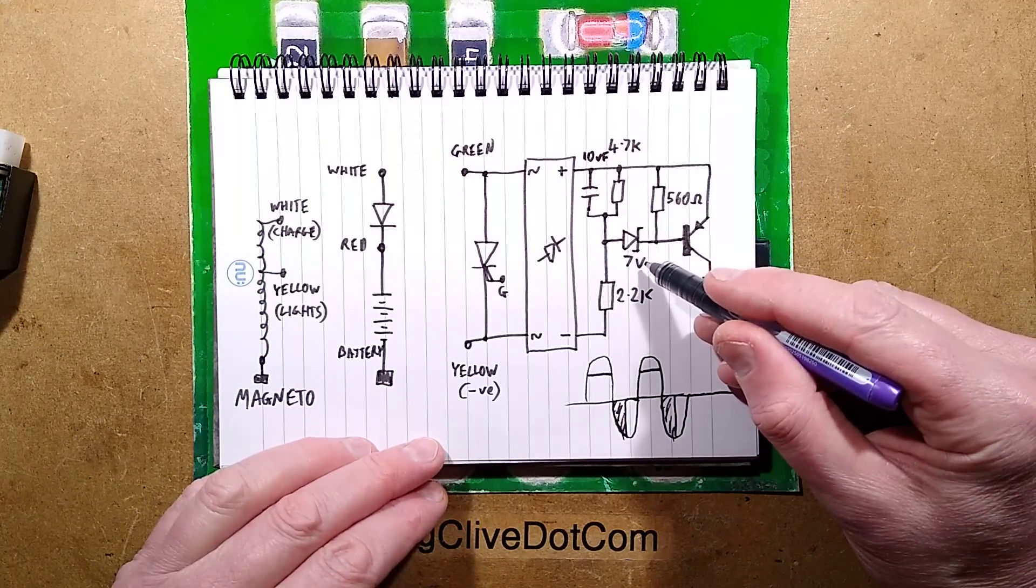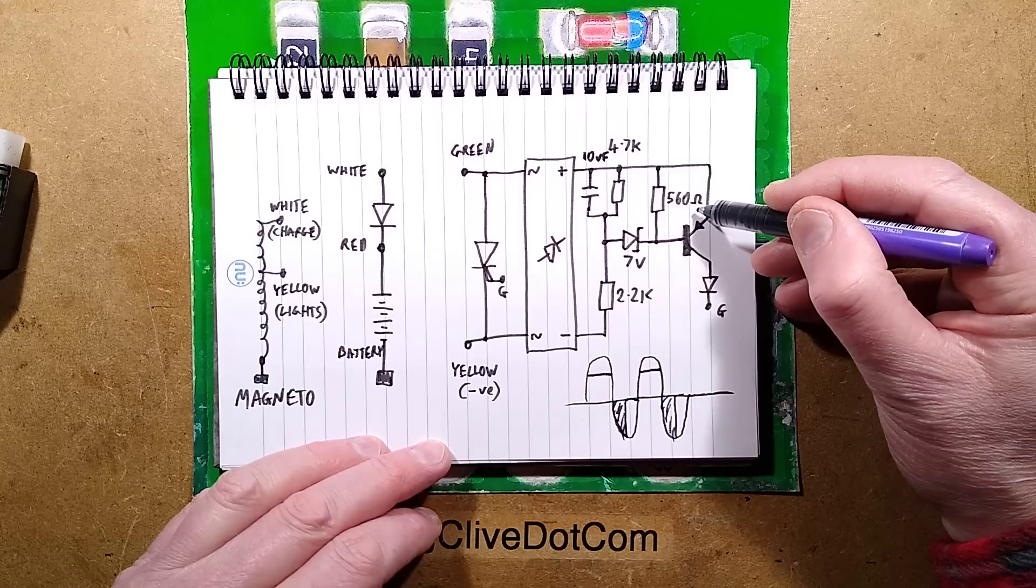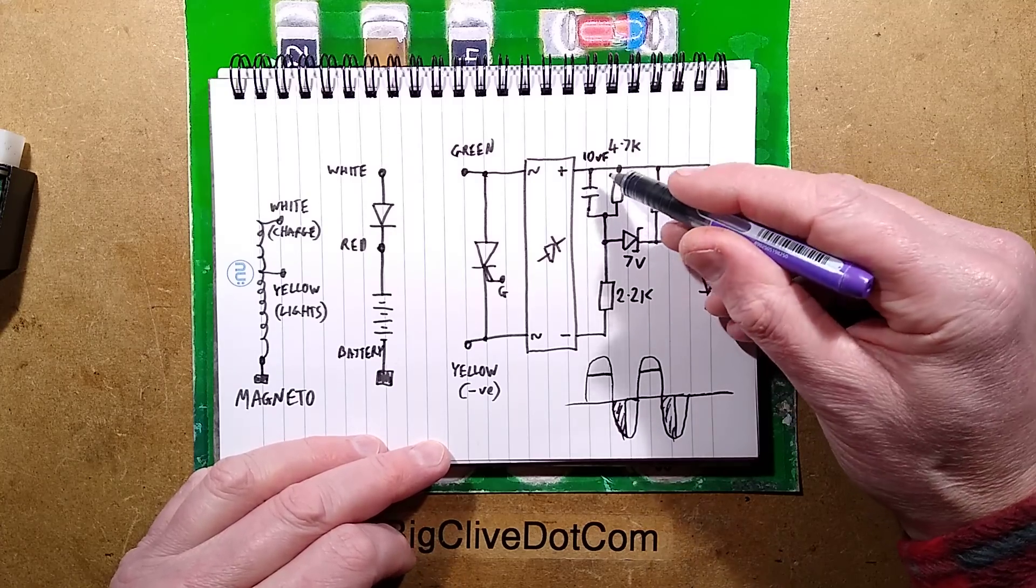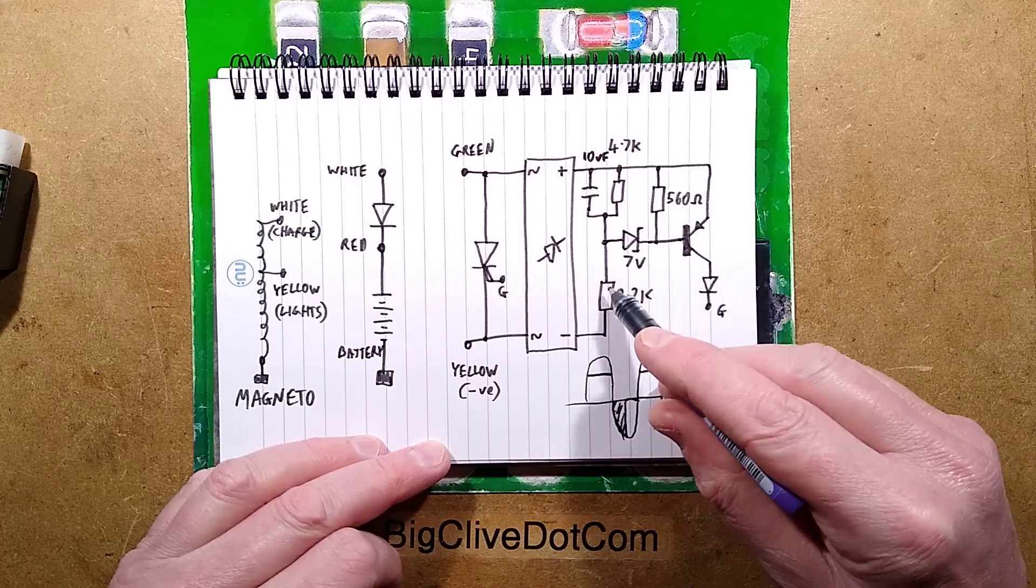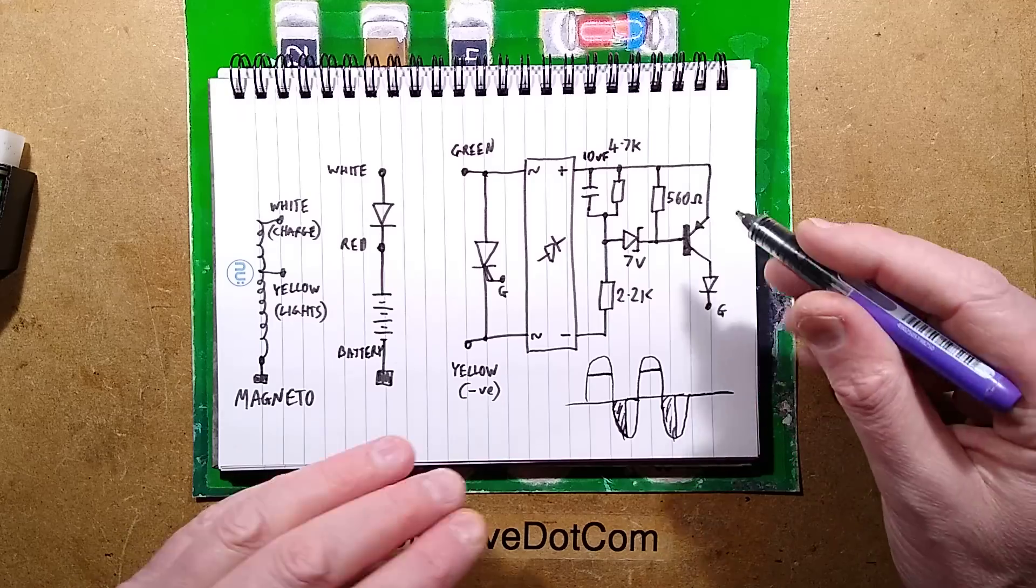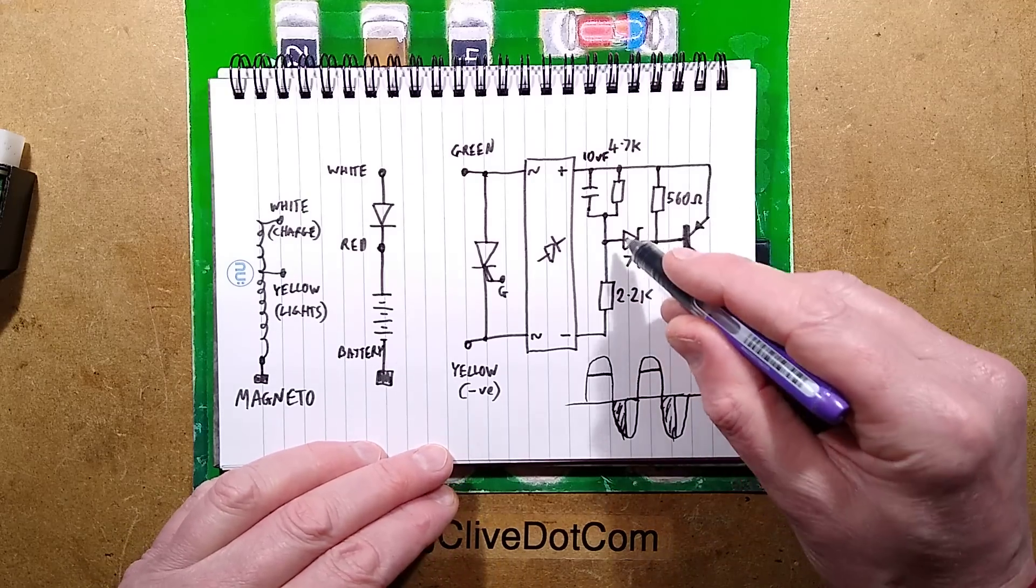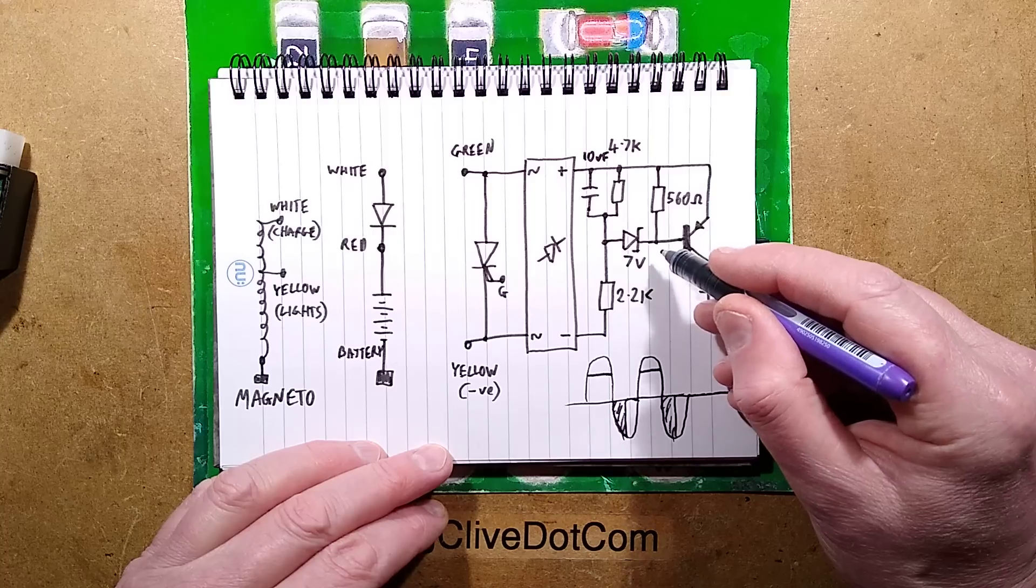The transistor is normally turned off, kept off by a 560 ohm resistor. But then there's a little network: a 10 microfarad capacitor and a 4.7k resistor across it, and then a 2.2k resistor. As the voltage increases to about 15 volts, this effectively forms a potential divider with a light time lag.